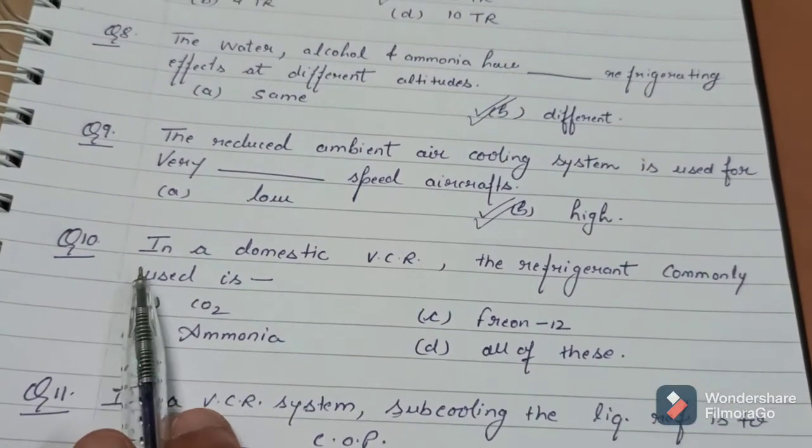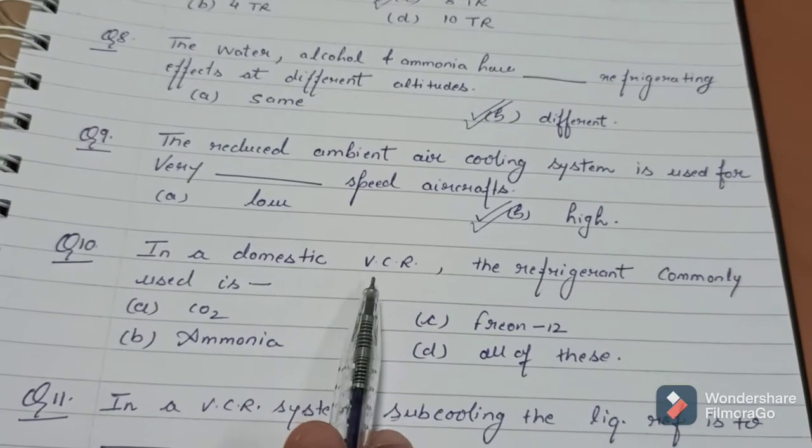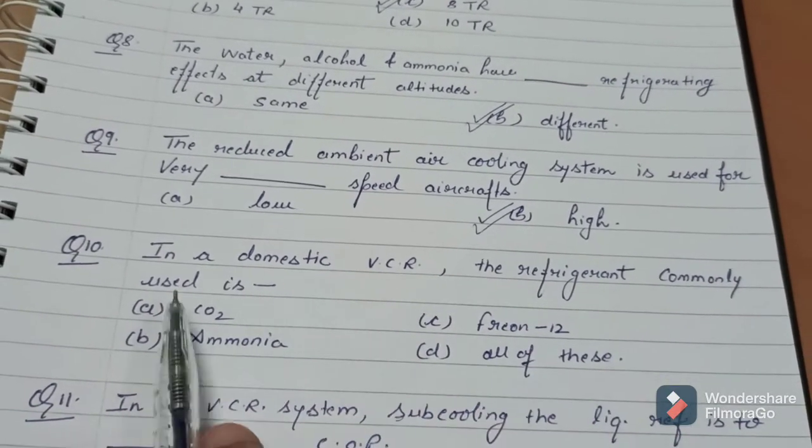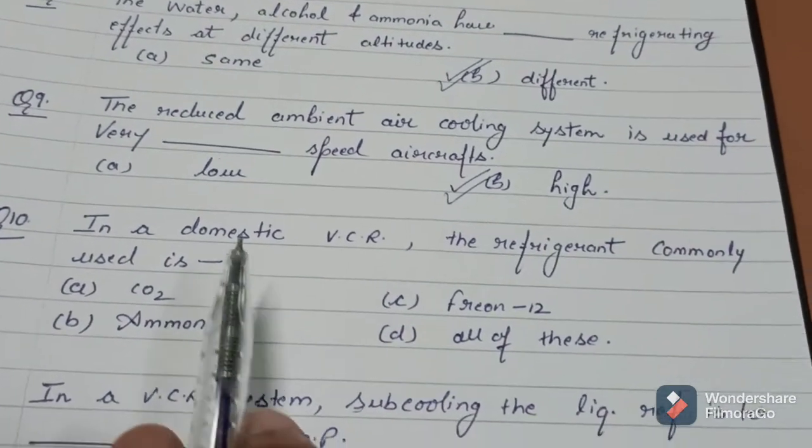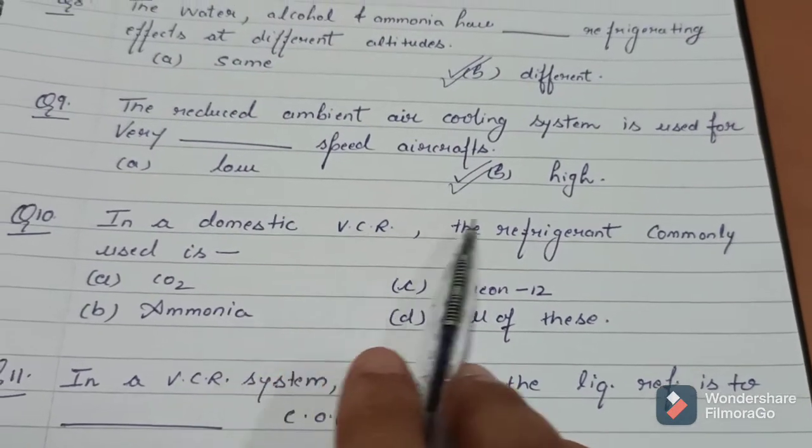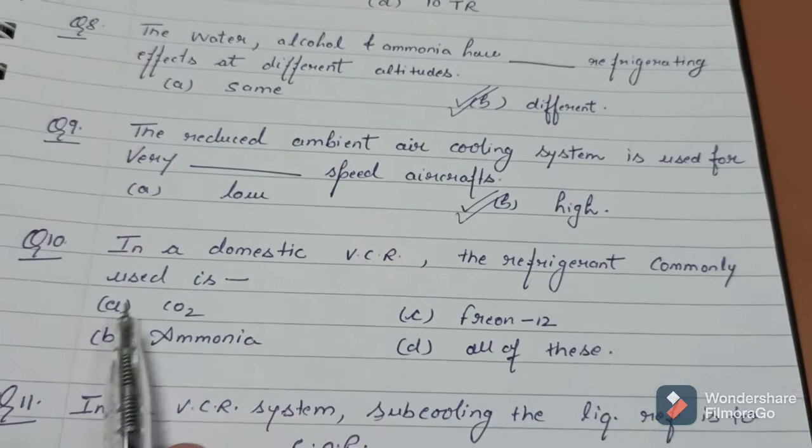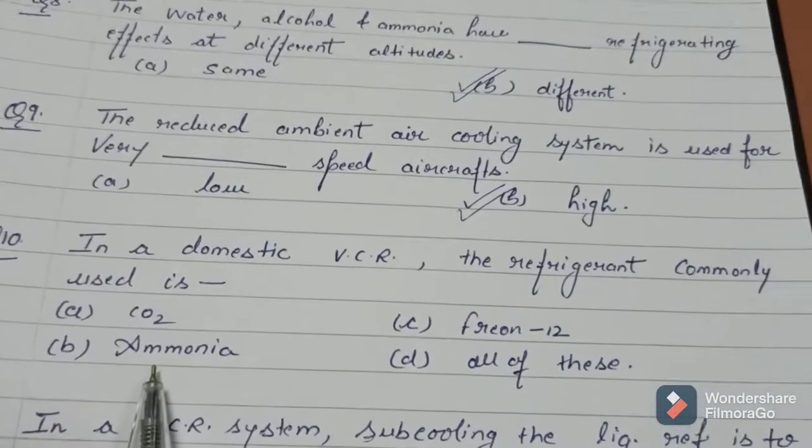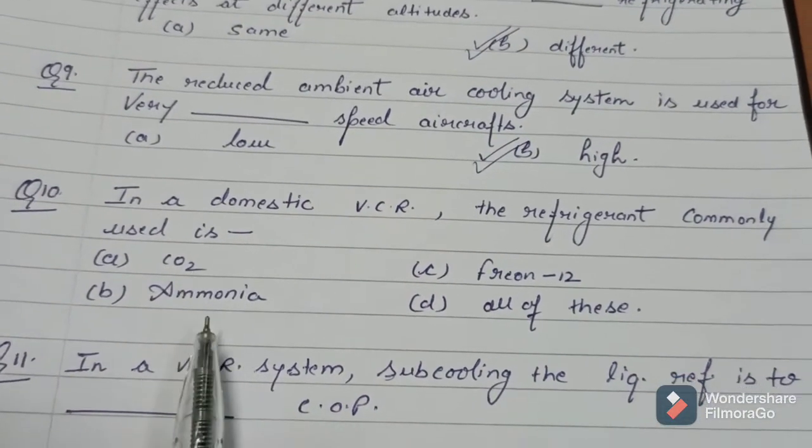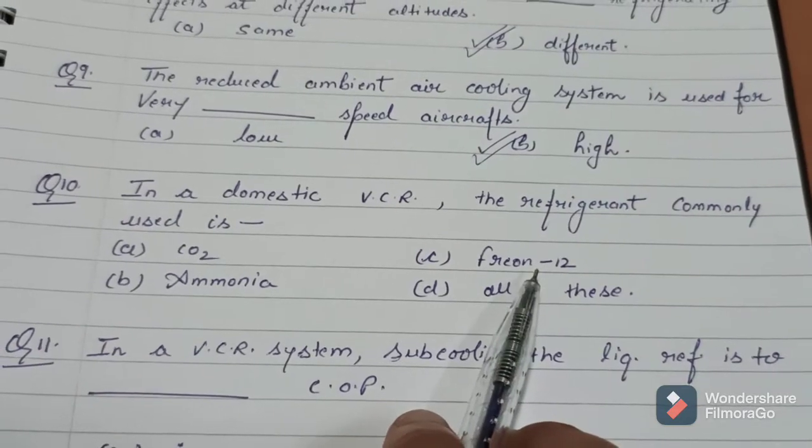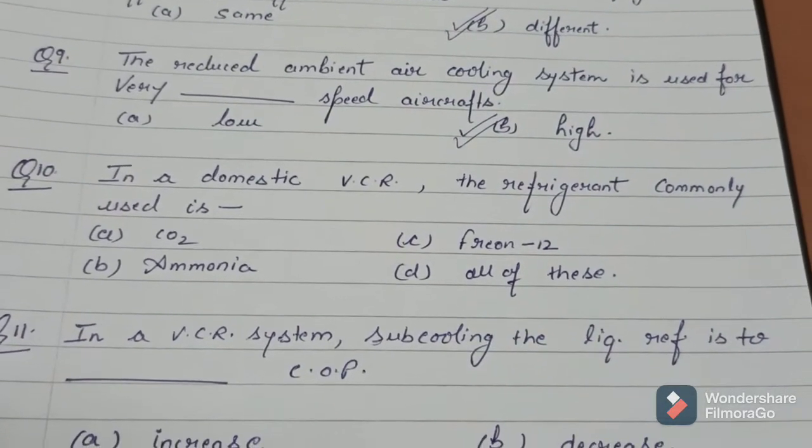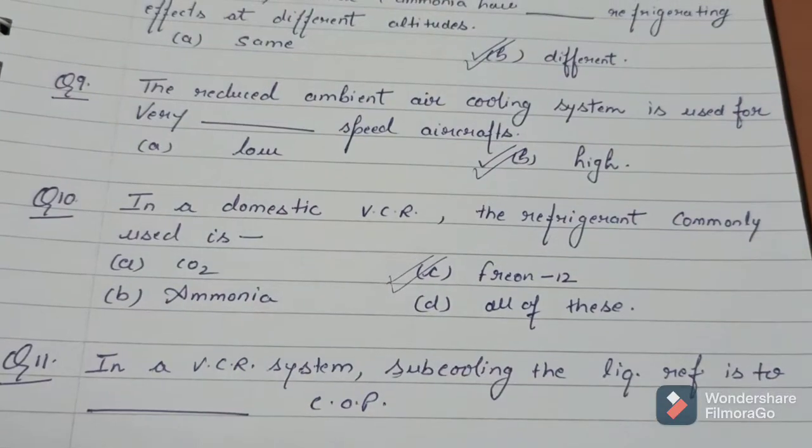Coming to question number 10. In a domestic VCR, the refrigerant commonly used is - in domestic vapor compression refrigeration systems, which refrigerant do we use? Carbon dioxide, ammonia, freon 12, or all of these? The answer to the question is freon 12.